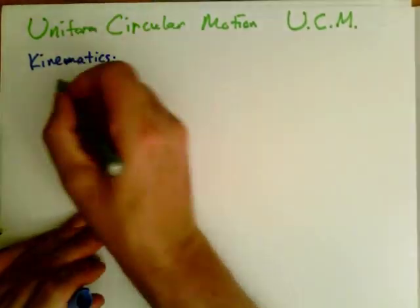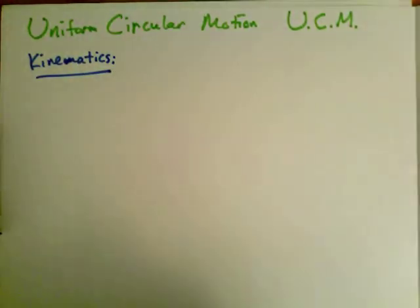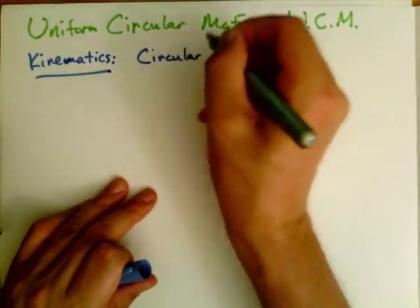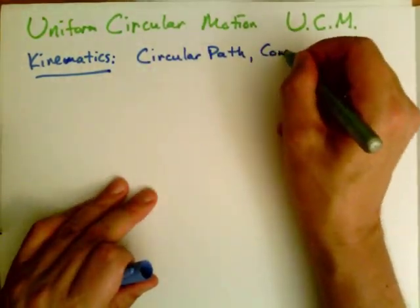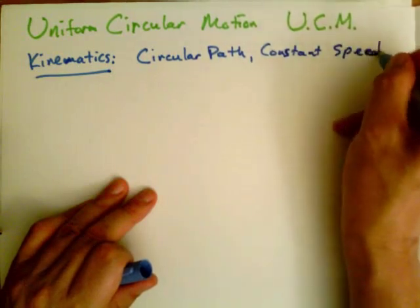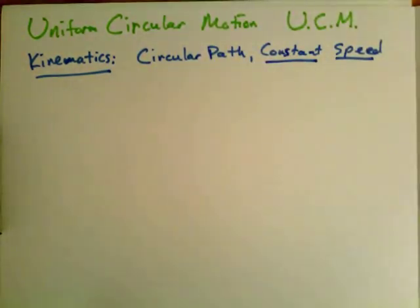For kinematics, we first want to describe the motion. So we're going in a circular path with constant speed. The magnitude of the velocity stays constant even though the direction of the velocity is changing.